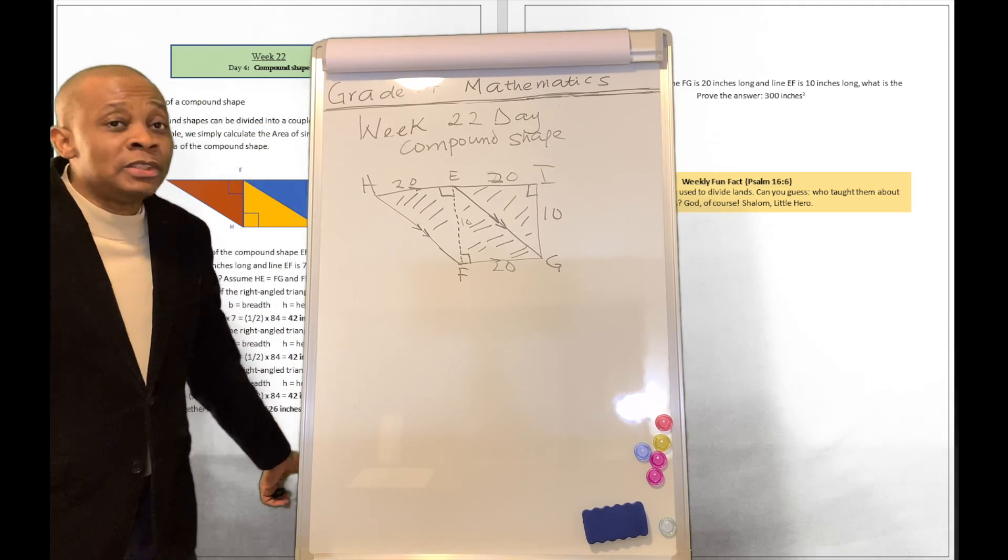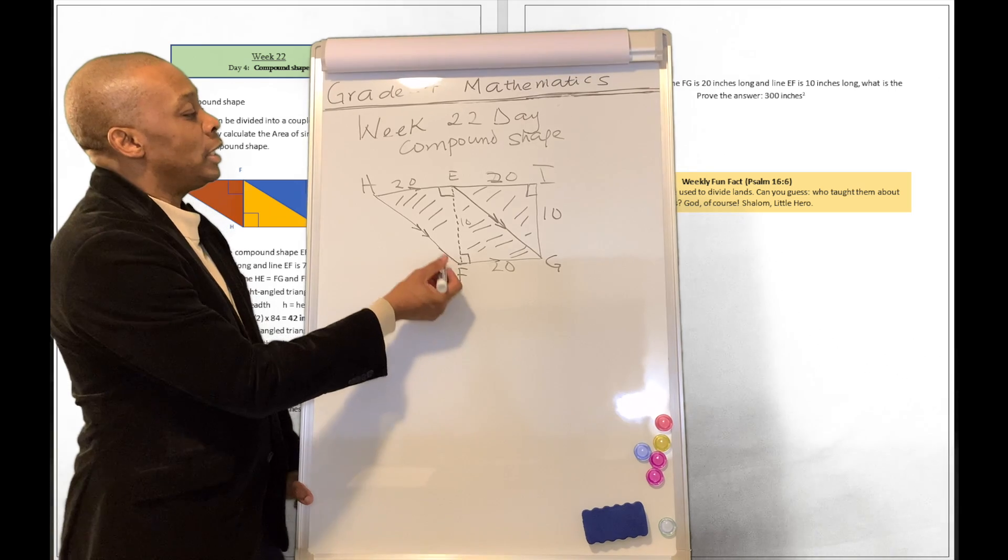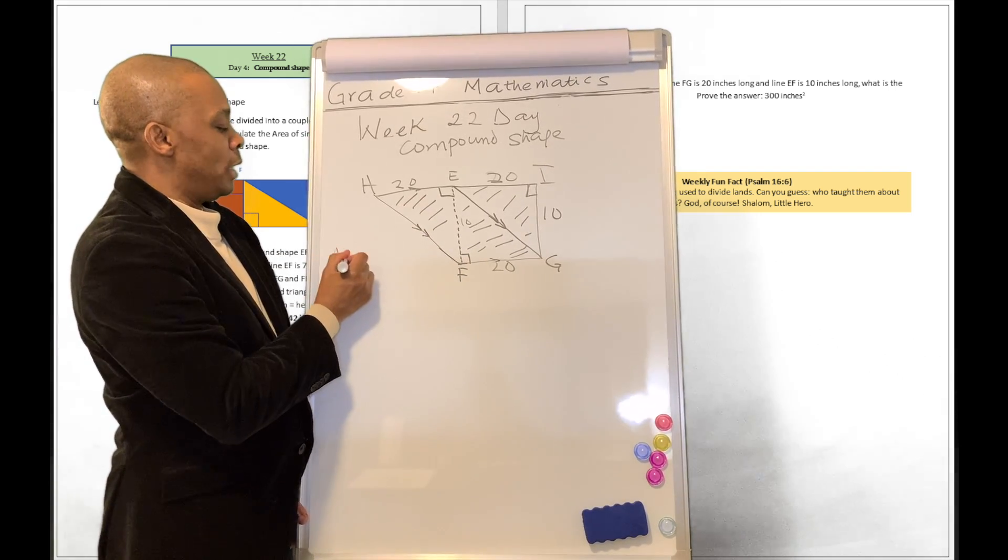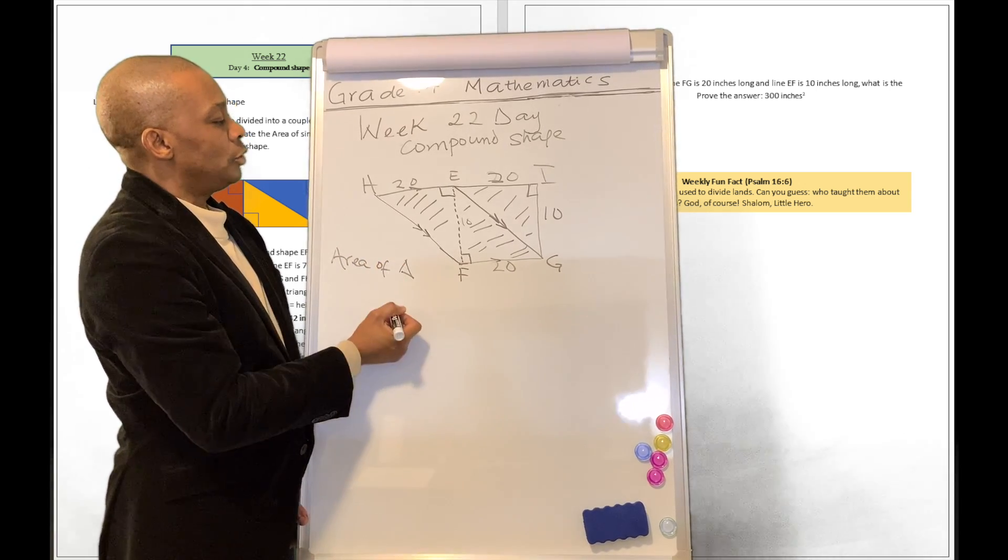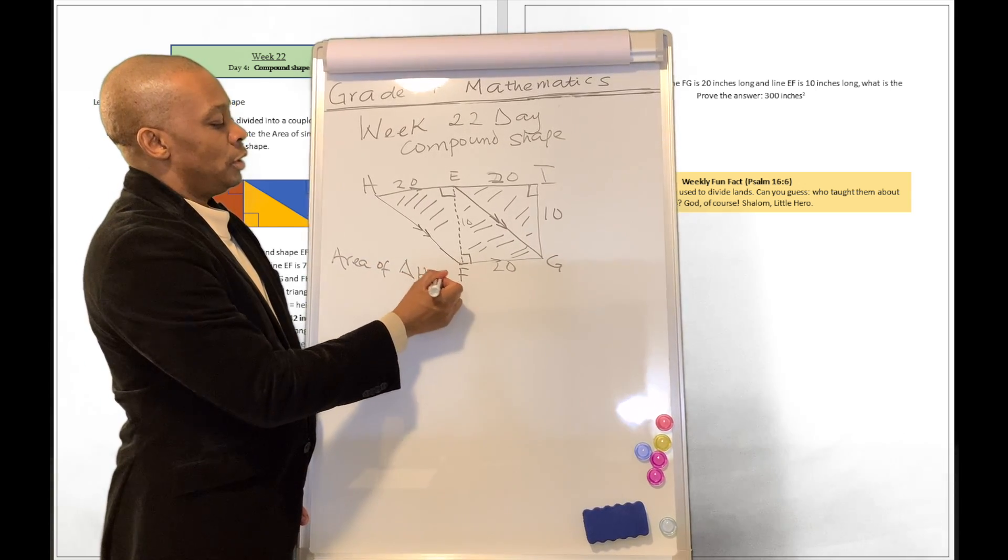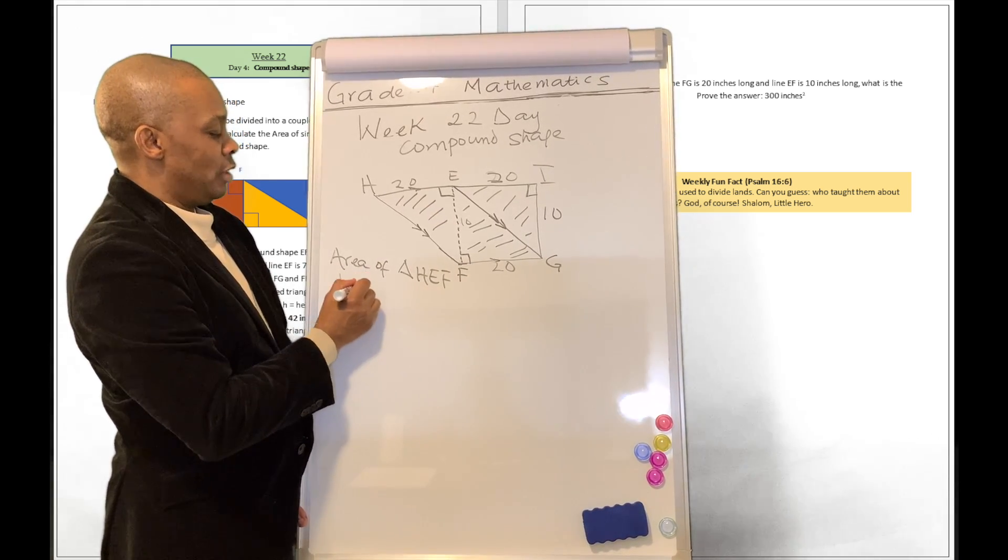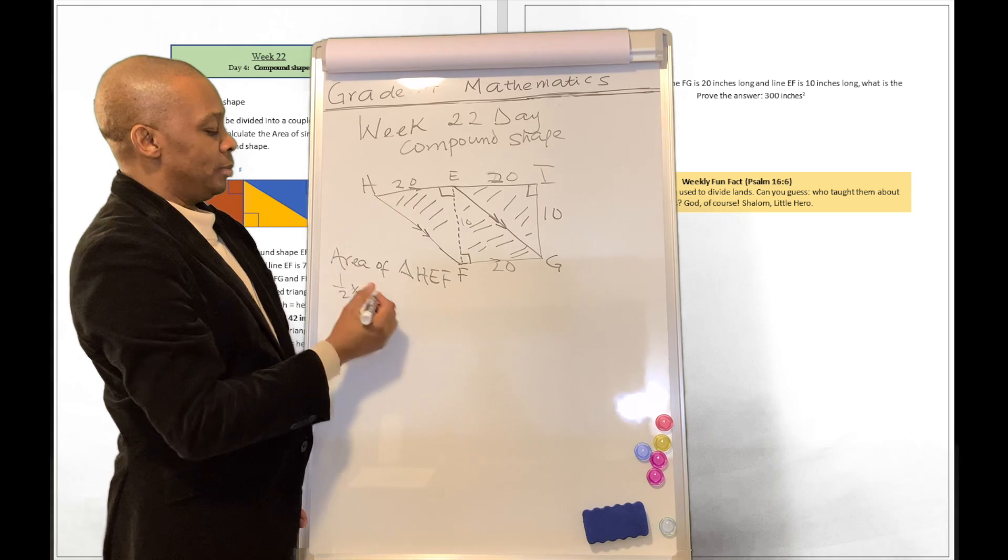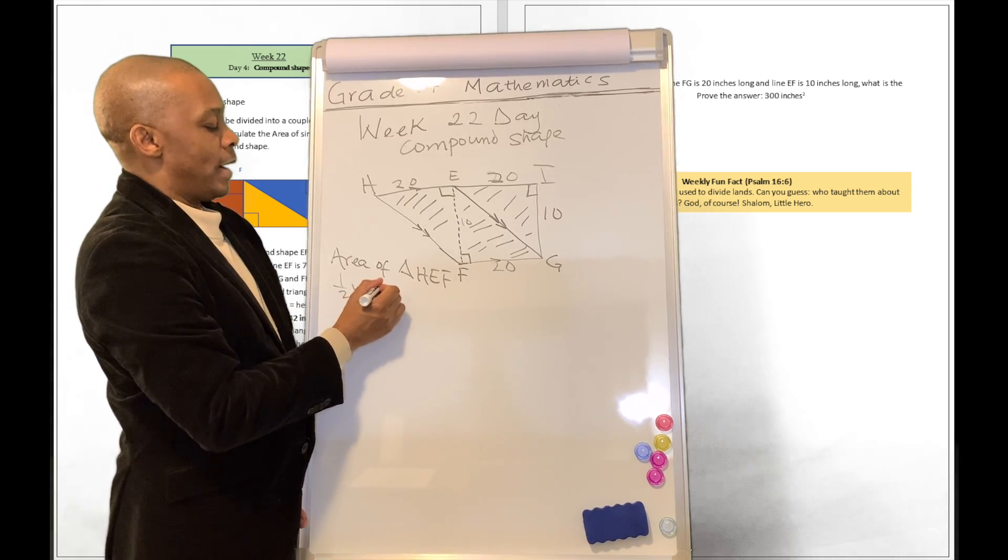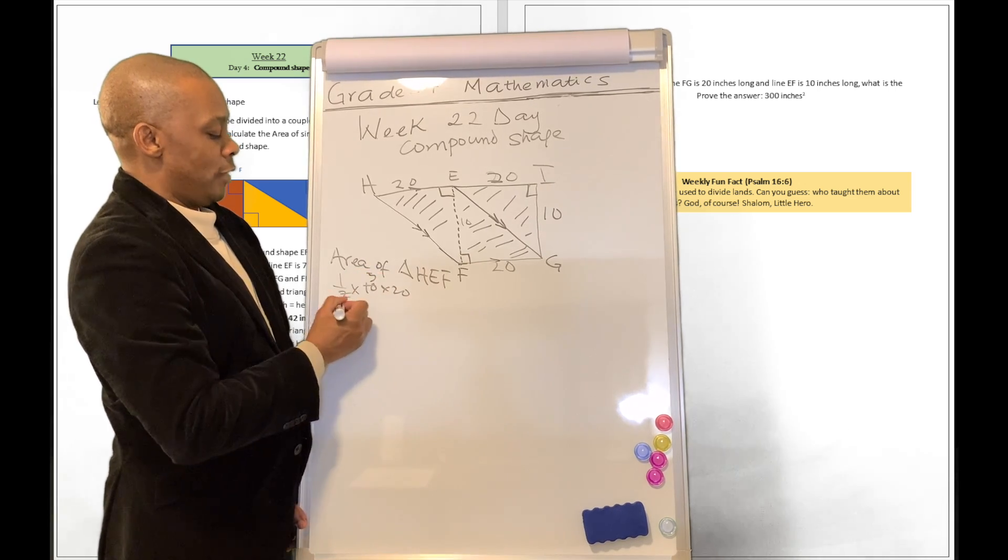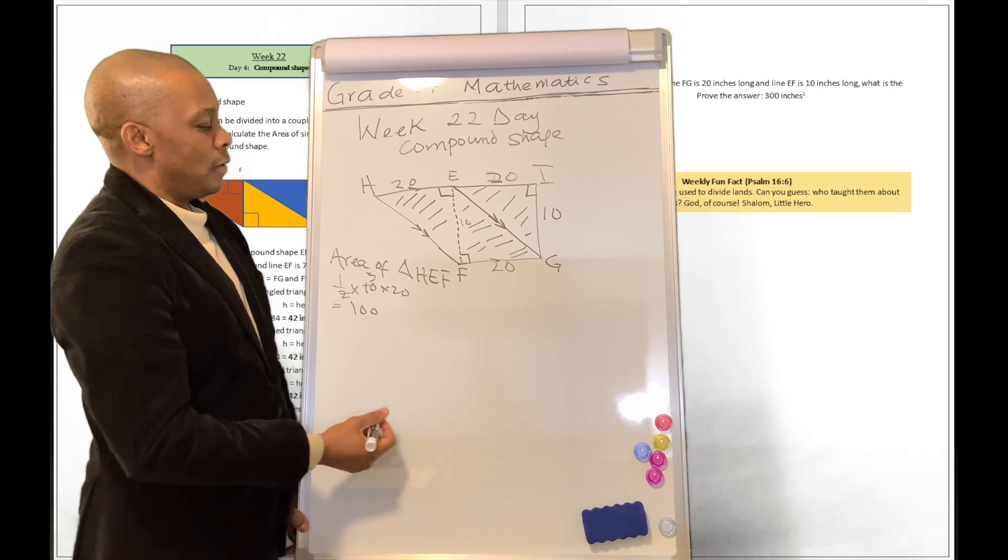That makes it easy. Let's try to calculate the area of right-angled triangle H, E, F. That's going to be equivalent to half multiplied by 10 multiplied by 20. And that's going to be equal to 100.